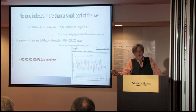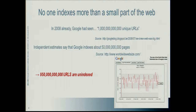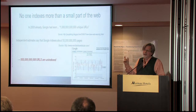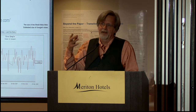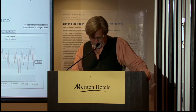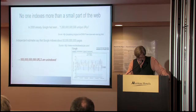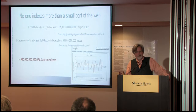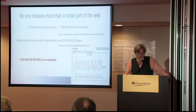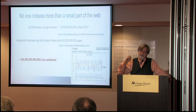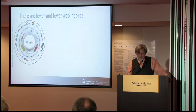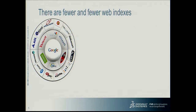There's a site called worldwidewebsize.com which estimates how many pages are found inside Google and Bing and other remaining web servers. They estimate there are about 50 billion pages indexed by Google. So if you take the 1 trillion pages Google has seen and the 50 billion pages in Google's index, there are 950 billion pages missing. There are a few reasons for that: a lot of those pages are junk, a lot are dynamically generated pages with no content, like calendars. But the main reason is commercial.